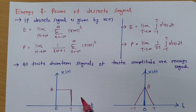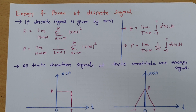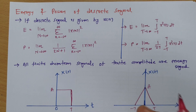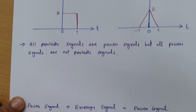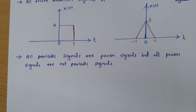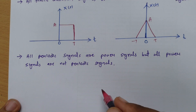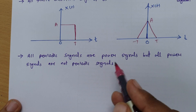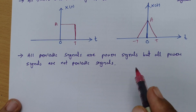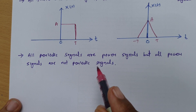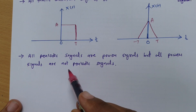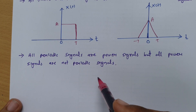By directly observing the shape of a signal, one can identify whether that given signal is an energy signal or a power signal. If the duration of the signal is finite, one can directly say that signal is an energy signal. Now, periodic signals are power signals, but all power signals are not periodic signals. Whenever you have been given a periodic signal, you should not calculate energy of it — it is a power signal. This type of question comes in GATE examinations.